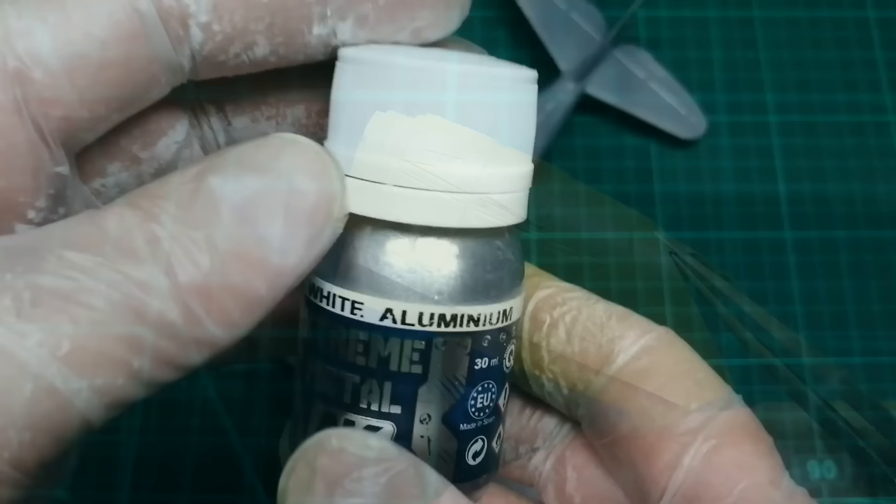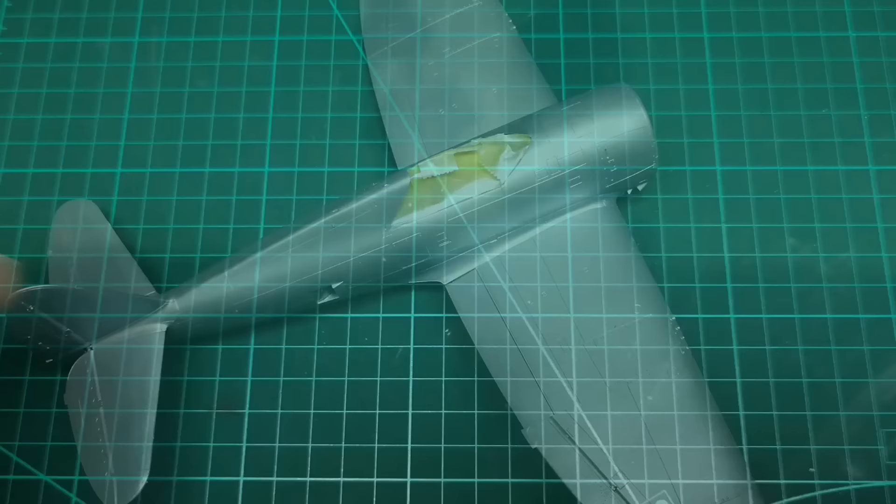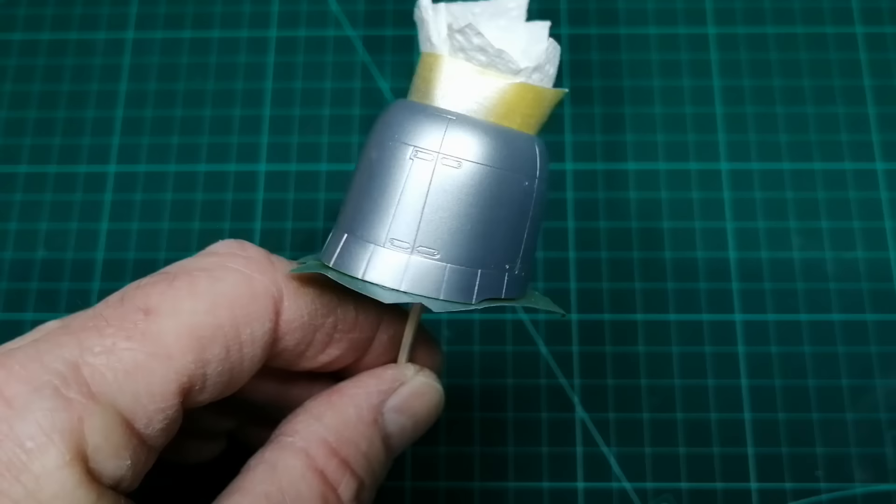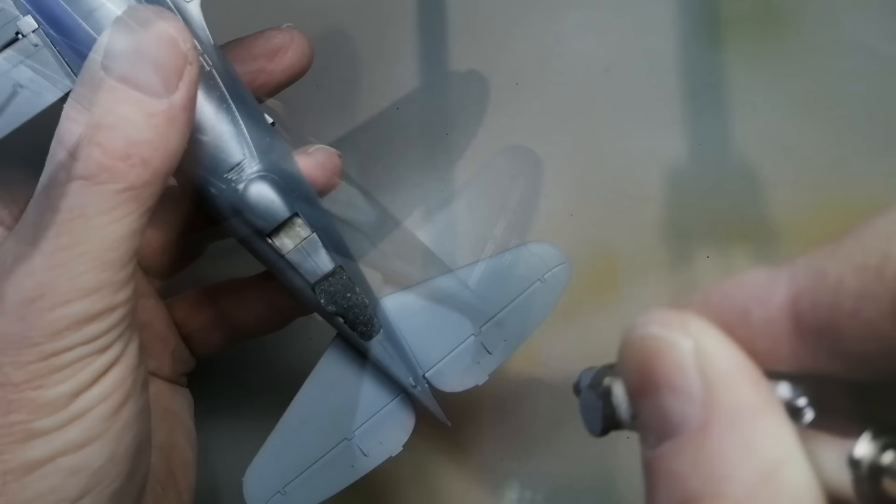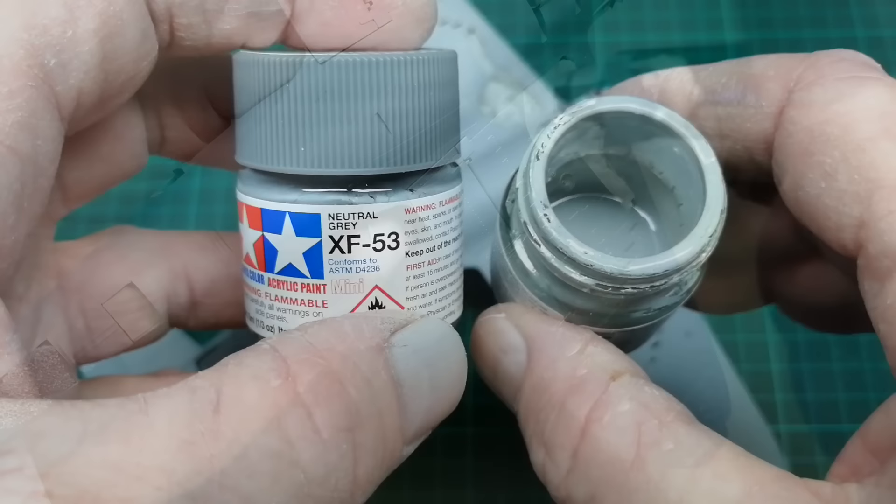So for my first coat on the P-47 I've applied AK's white aluminium. I was just going to do certain areas but I ended up painting everything. With the aluminium dry my first coat is a light grey. After that a darker version of this is applied over the top.